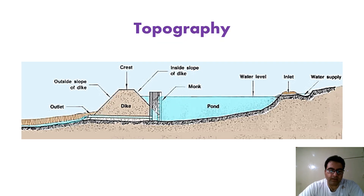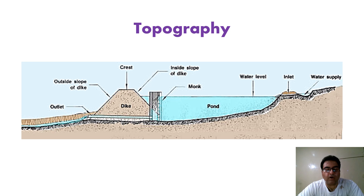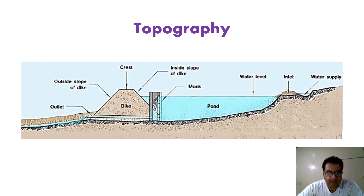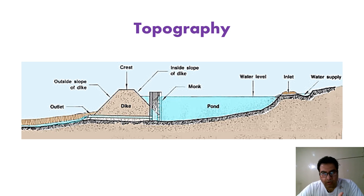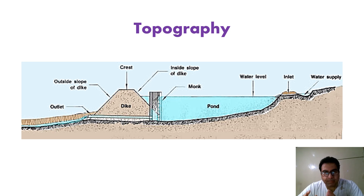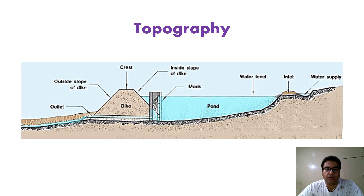When we talk about topography, the term means the surface features of an area and is important both from the point of view of construction and maintenance. We mostly prefer an area which is gently sloping — in a wide valley, a bowl-shaped area with high lands on three sides and a narrow inlet on the fourth side. This kind of site is economical for an aquaculturist to construct a farm.